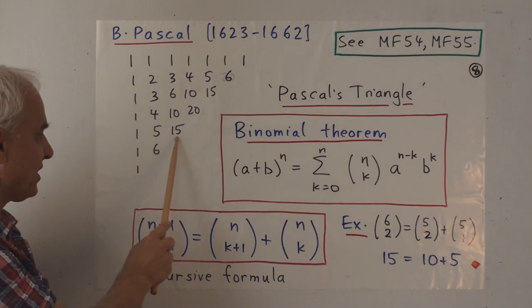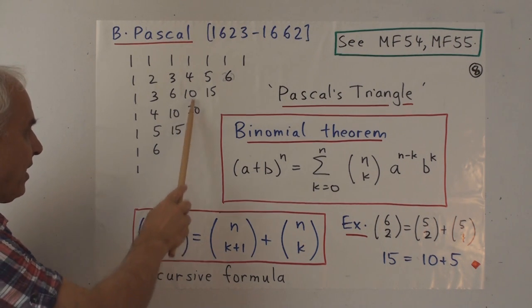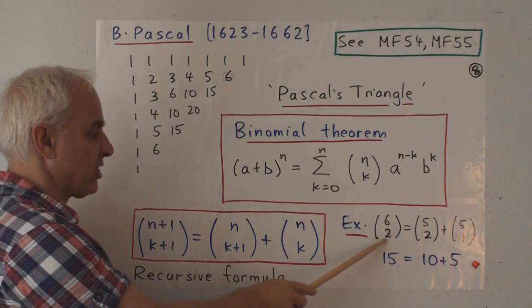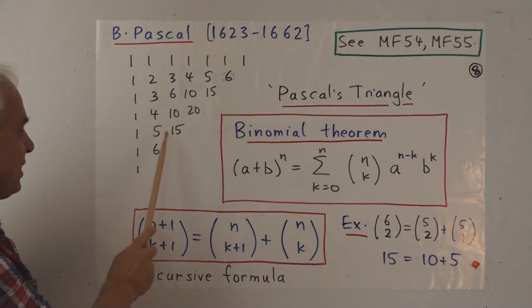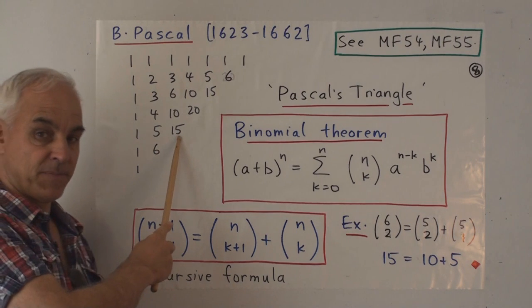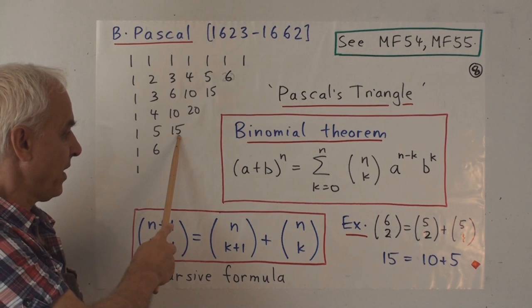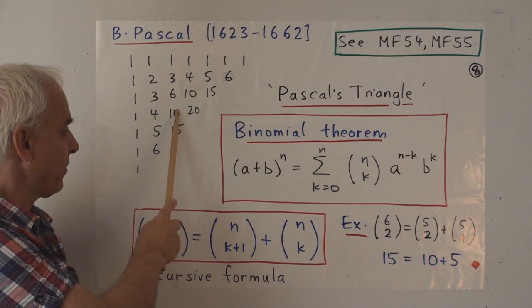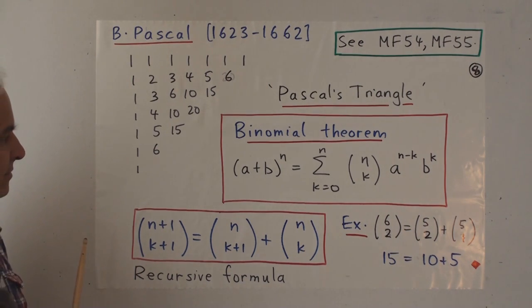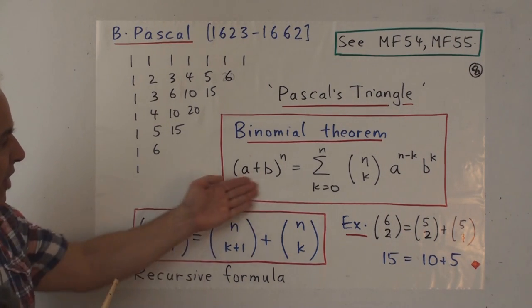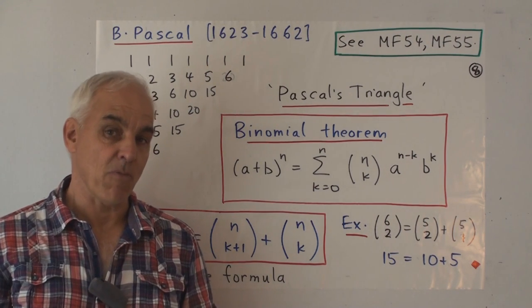So this 15 here is the sum of five to the left and ten above it. This 20 is a sum of ten and ten. So for example six choose two is five choose two plus five choose one. There is six choose two that's 15. That's six times five divided by two factorial or 15. And that's equal to five choose two which is ten plus five choose one which is five.